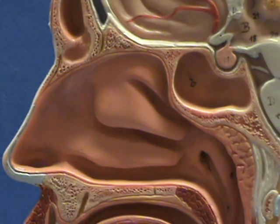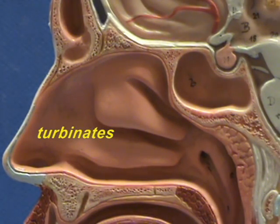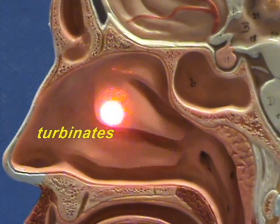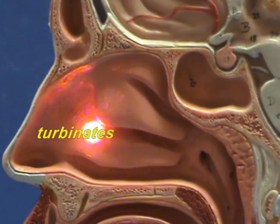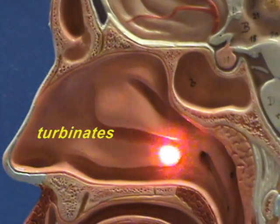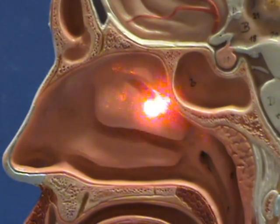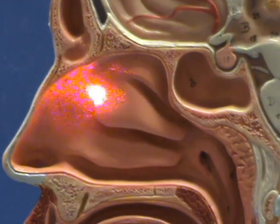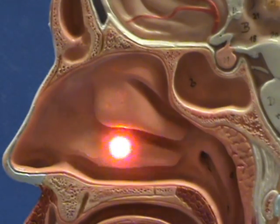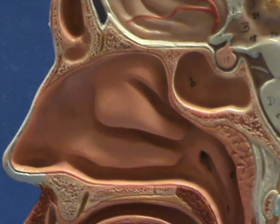These are also referred to as turbinates, and the reason they're called turbinates is because they create narrow passageways which cause the air, as it flows through the nasal cavity, to go into eddies—in other words, to undergo turbulence. This increase in turbulence increases the contact of the air with the mucous membrane lining the nasal cavity.